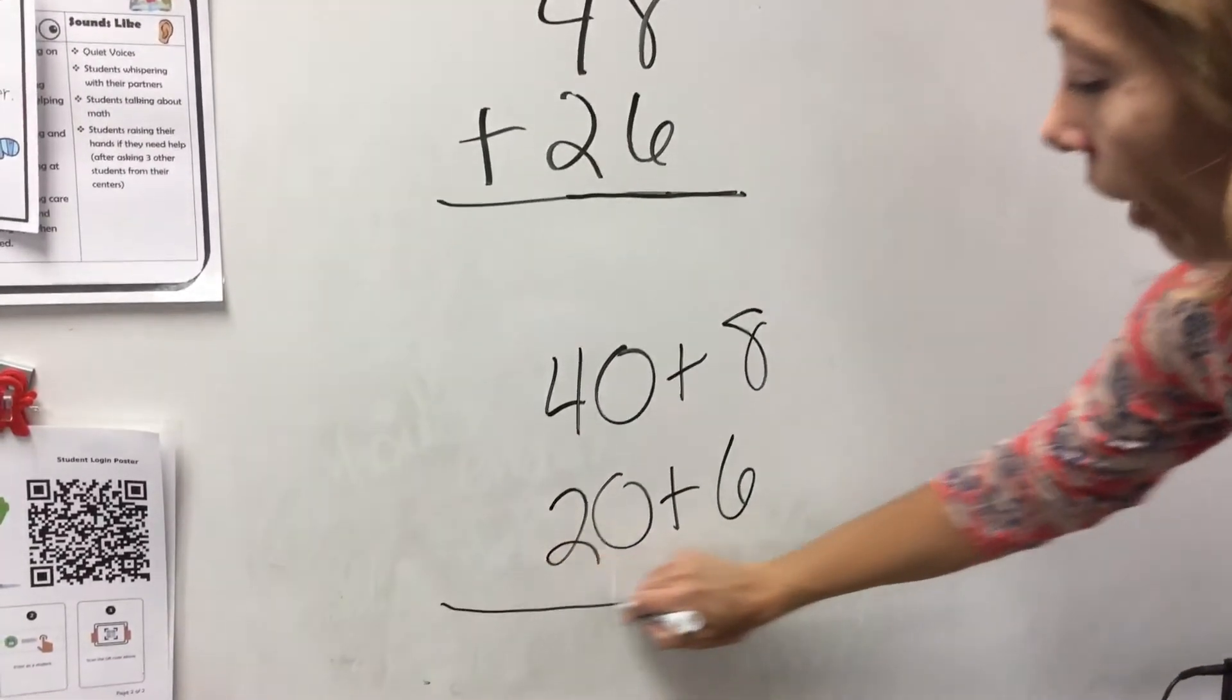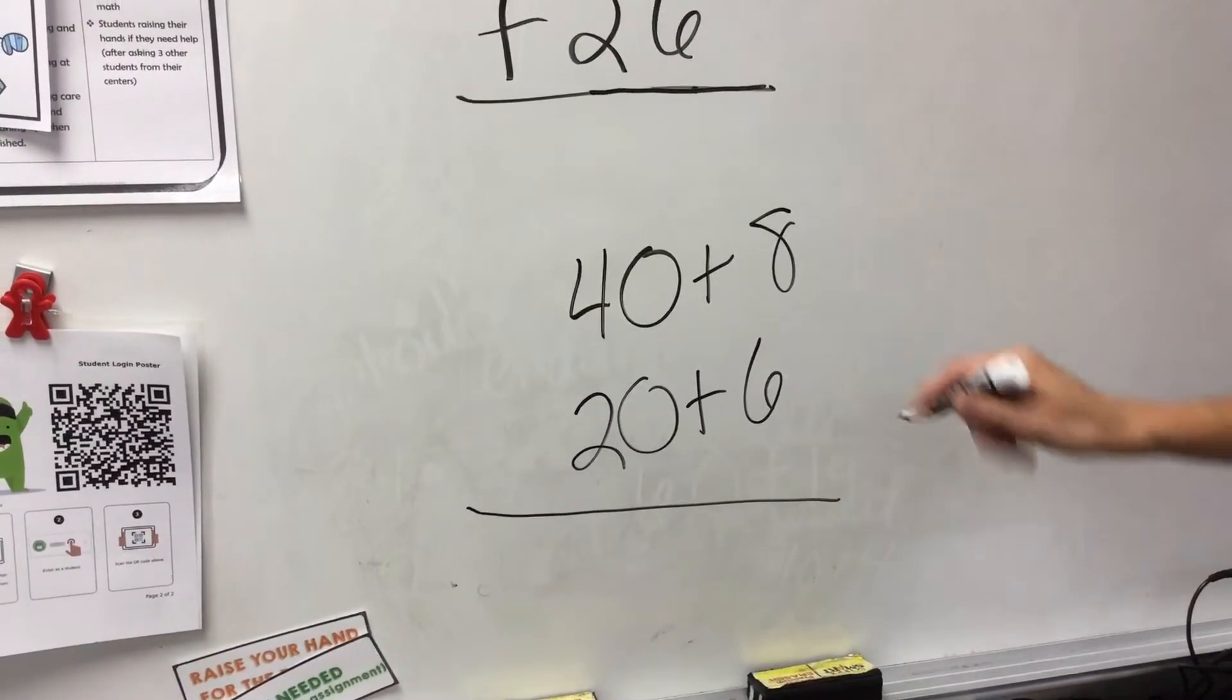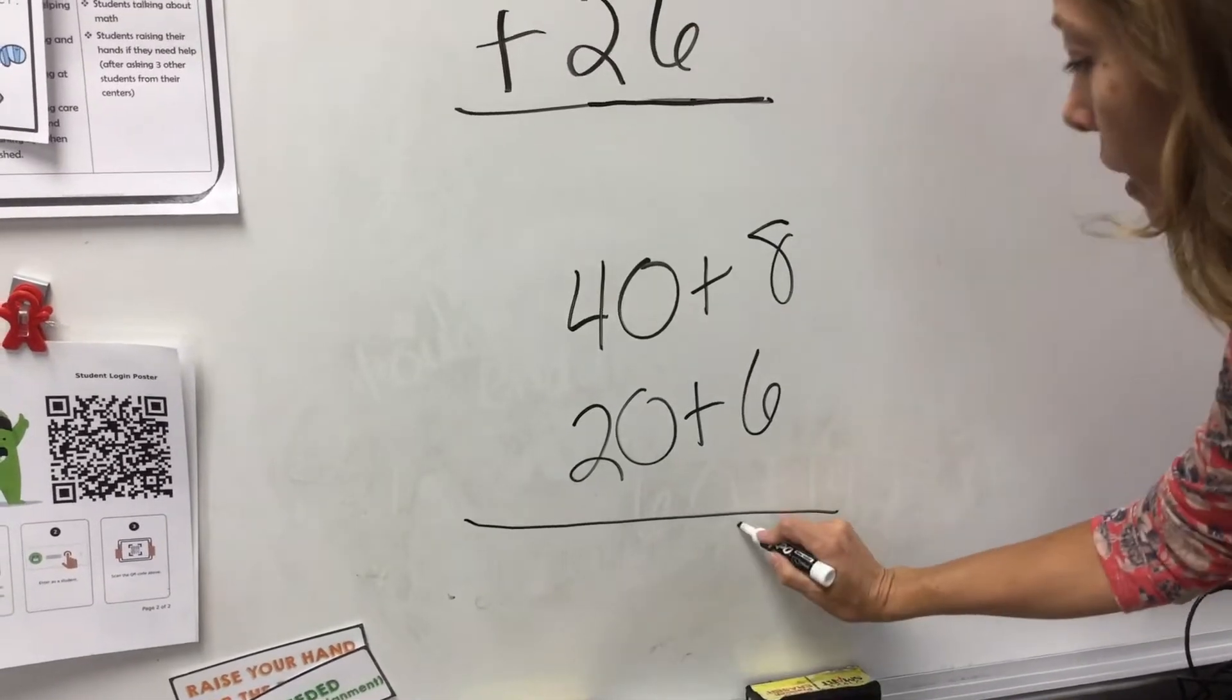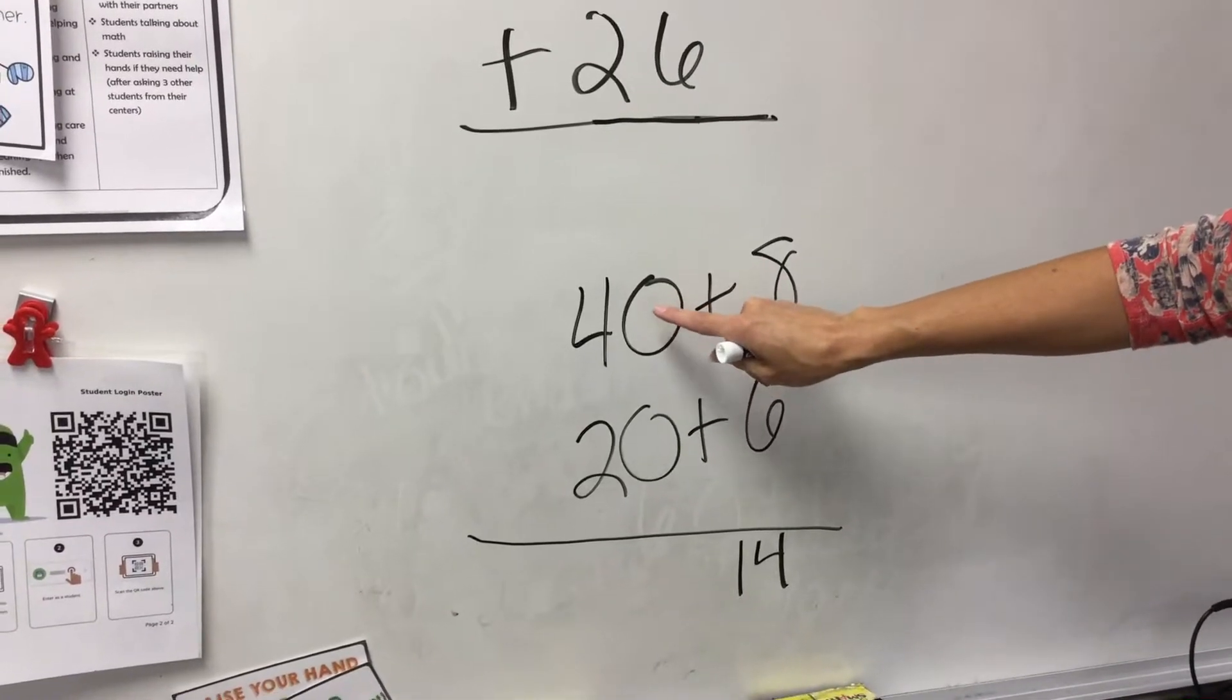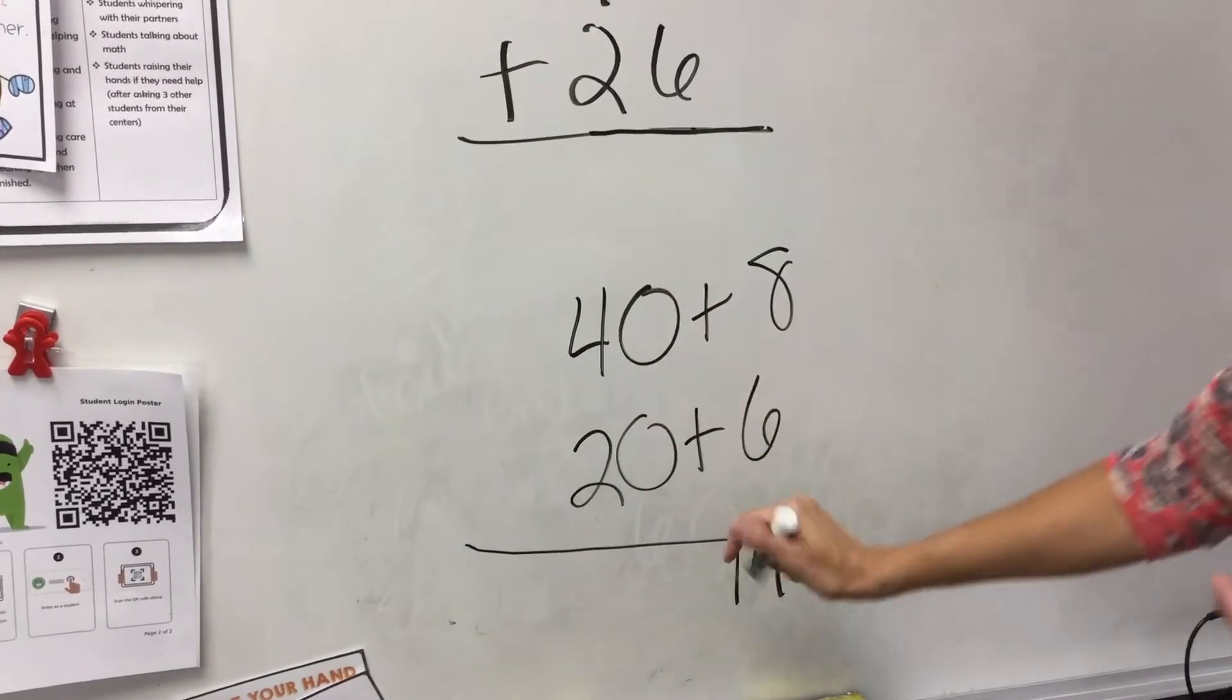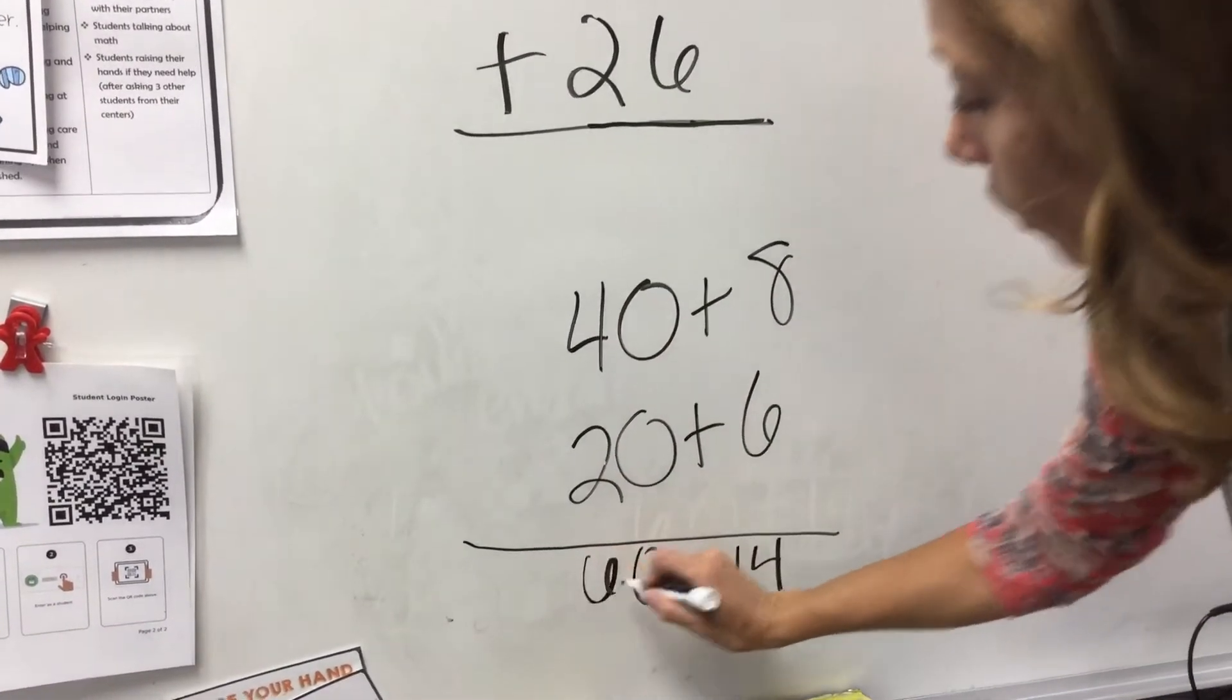So now I can come down and do another addition problem that might be a little easier to add. So eight plus six in my head, I know, is 14. And then over here, I can either skip count by tens in my head, or I can just know that 40 plus 20, I know that there's zeros here in my ones place. I can put that zero, and the four plus two gives me six. So it's 60.